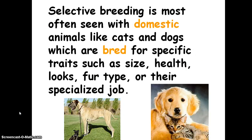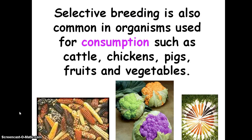Selective breeding is most often seen with domestic animals like cats and dogs, which are bred for specific traits such as size, health, looks, fur type, or their specialized job. We have different breeds of dogs because we want specific characteristics — a very big dog, a very small dog, a very friendly dog, or one that's very good at hunting. Selective breeding is also common in organisms for consumption, such as cattle, chickens, pigs, fruits, and vegetables.